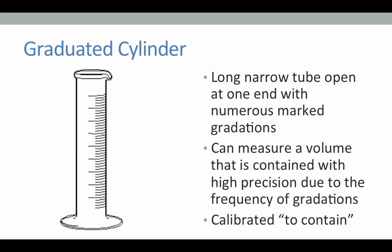The graduated cylinder is another very accurate piece of glassware. It is a long, narrow tube with an opening at only one end and it has numerous gradations marked along the side of it. These gradations are calibrated to contain just like the volumetric flask, so the graduated cylinder can be used to very accurately measure an amount of solution regardless of whether it matches a specific calibration point as for the volumetric flask.